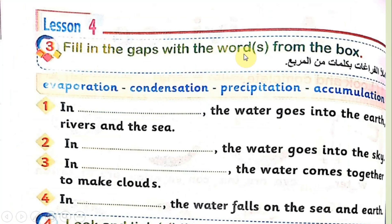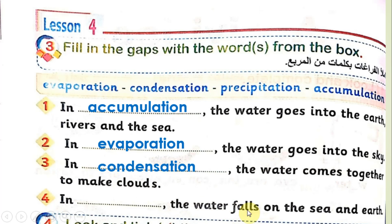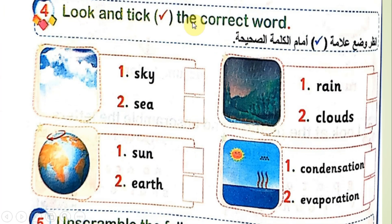Activity 3: Fill in the gaps with words from the box — Evaporation, Condensation, Precipitation, Accumulation. Number 1: 'The water goes into the earth, rivers and the sea' — this is Accumulation. Number 2: 'The water goes into the sky' — this is Evaporation. Number 3: 'The water comes together to make clouds' — this is Condensation. Number 4: 'The water falls on the sea and earth' — this is Precipitation.